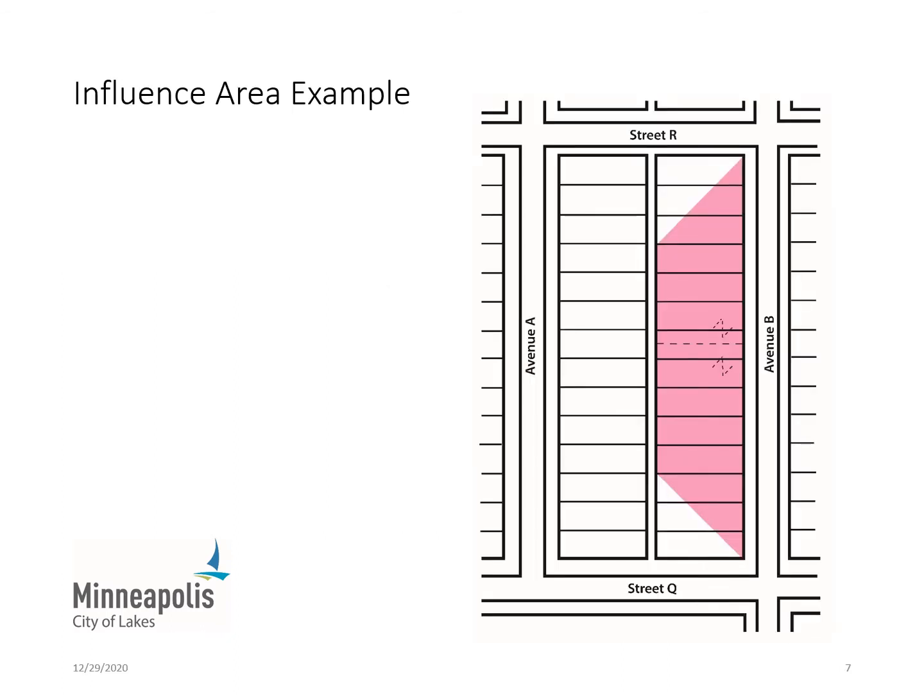This slide illustrates what an influence area might look like for a typical residential street. If you look at this typical residential block example, if Avenue B was being resurfaced, the property area within the pink trapezoid would be within the influence area of the project and subject to assessment. This influence area method is a way to uniformly assess properties based on square footage that is fair to corner properties.